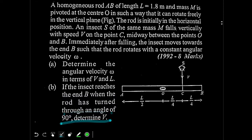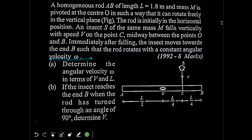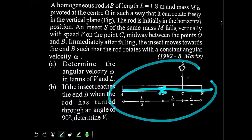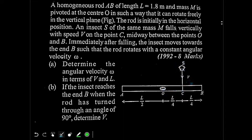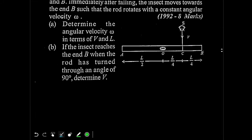We have to solve two parts one by one. The important part is that omega, the angular speed of the rod, always remains constant — that's what is given. Now in the initial situation, this is your rod AB pivoted at the center. This is half the length L by 2 on each side. At distance L by 4 from the center is point C, where the insect is falling with speed V. It sticks to the rod and starts moving towards end B.